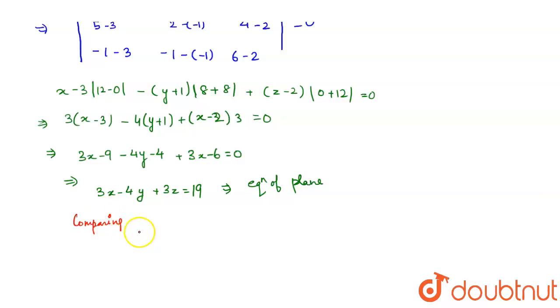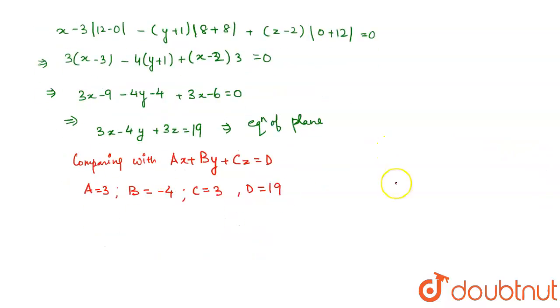Comparing the equation with AX+BY+CZ=D. We get A is equal to 3, B is equal to -4, and C is equal to 3, D is equal to 19. So, now, what is the formula of distance from the plane?